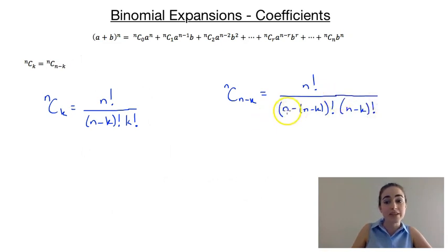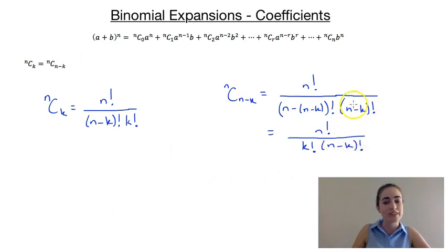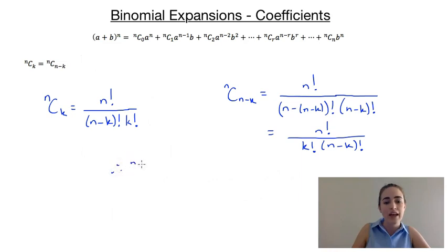Now if we go through and simplify this bracket, we have n factorial on the top, and down here we'd have n minus n, and then we've got a minus minus k, so we'd have k factorial for that first bracket, and then we'd have (n minus k) factorial for the second bracket still. So that proves that nck is equal to nc(n minus k), proving that symmetry.